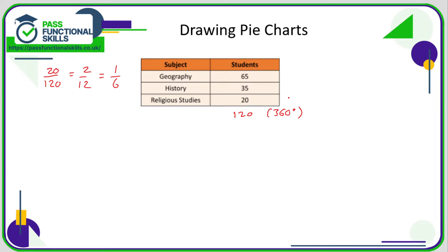The history is 35 out of 120. Now we don't actually need to simplify the fraction. We didn't need to simplify this one really.